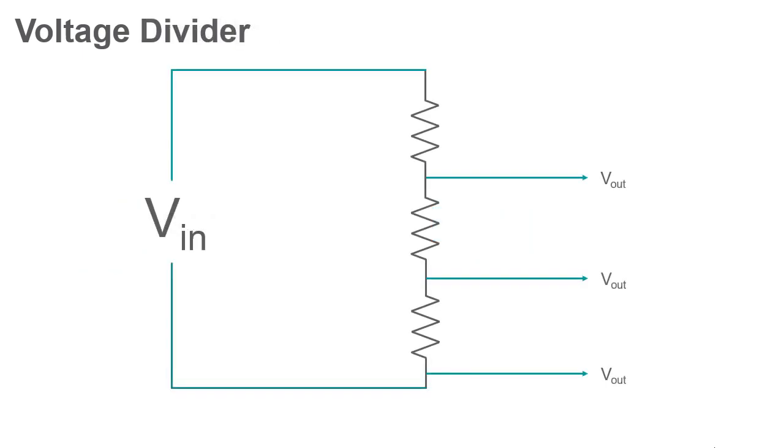Voltage dividers use series resistors to create output voltages smaller than the voltage going into the circuit. Voltage is dropped across each resistor, leaving lessened voltages that are output from the circuit in a parallel connection.